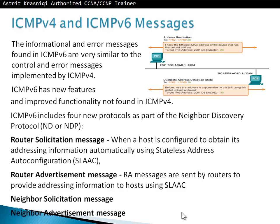The information and error messages found in ICMPv4 are similar to the control and error messages implemented by ICMPv6. ICMPv6 has new features and improved functionality not found in ICMPv4. ICMPv6 includes four new protocols as part of the Neighbor Discovery Protocol, ND or NDP.